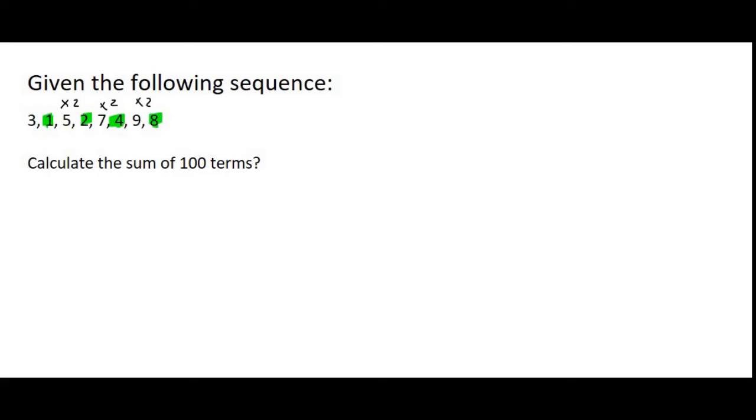So to get from 1 to 2 you times by 2 and then to 4 and then to 8. So we have a combination question over here where we have half of the terms being geometric and the other half are arithmetic.